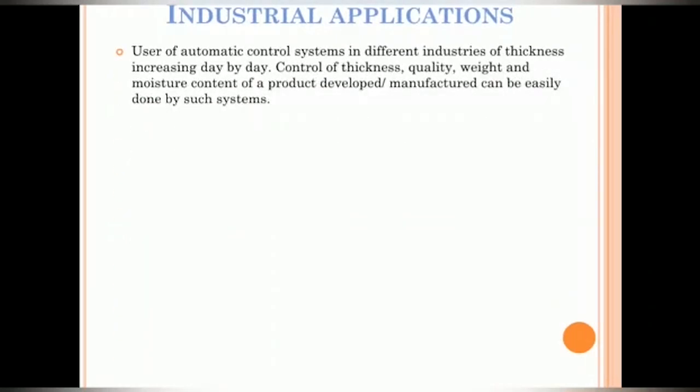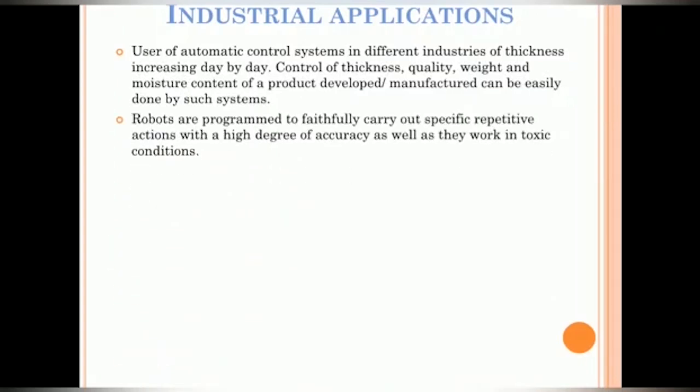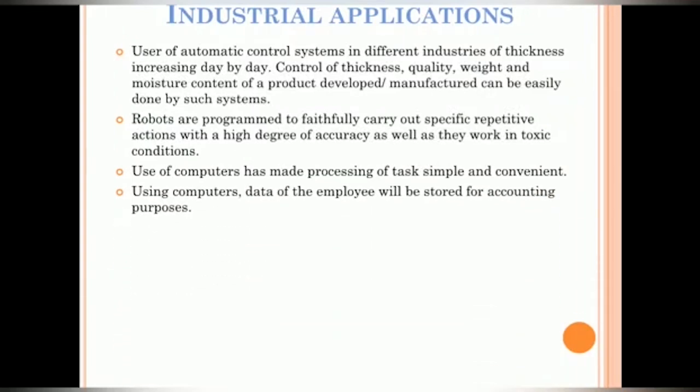Applications. Use of automatic control systems in different industries is increasing day by day. Control of thickness, quality, weight and moisture content of a product developed or manufactured can be easily done by such systems. Robots are programmed to faithfully carry out specific repetitive actions with high degree of accuracy as well as they can work in even in toxic conditions. Use of computers has made processing of tasks simple and convenient. Using computers, data of the employee can be stored for accounting purposes. Electronics fire detectors, burglar alarms, smoke detectors and CC camera provides security to industries.